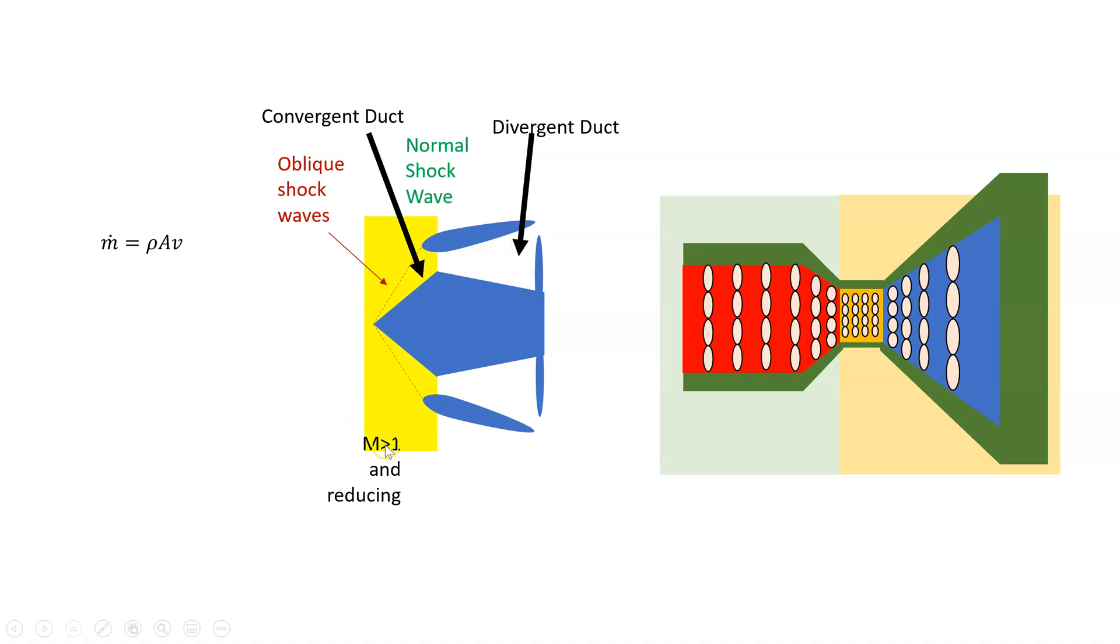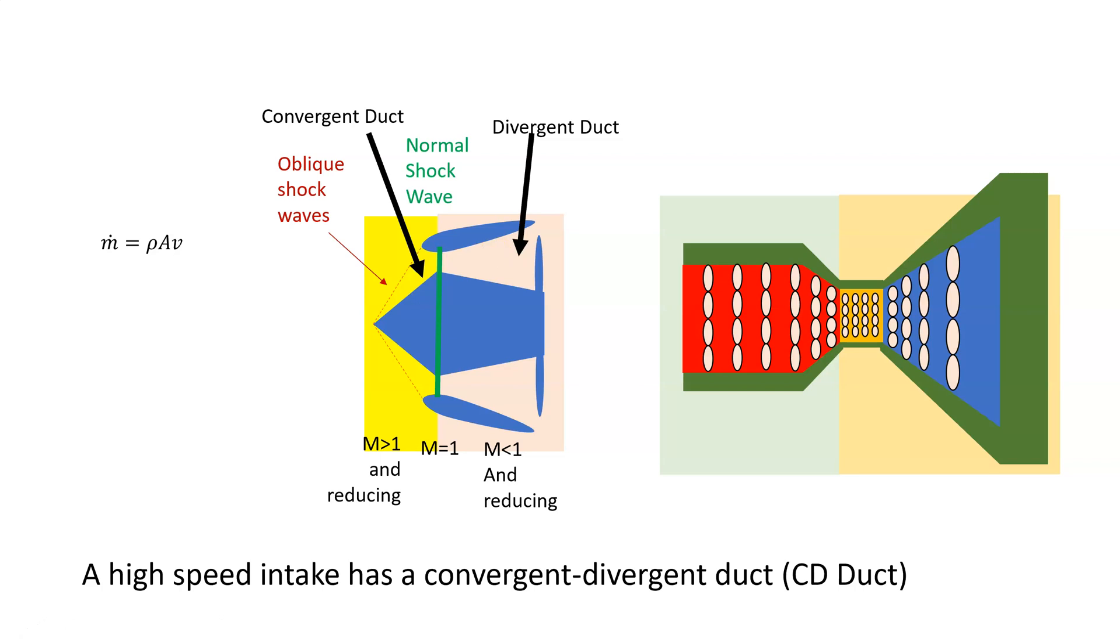So air is coming in, it's greater than Mach 1. It's coming through a duct like this, it's getting compressed, it's slowing down. At some point in the throat here, we're going to get a normal shock wave. So we have Mach 1 here, but as the air is slowing down, so on this side, it's less than Mach 1. And when it's less than Mach 1, it's subsonic air. And in subsonic air, we want this divergent section. So the area is increasing, the velocity is decreasing, and the pressure is increasing. So for a high-speed intake, we want a convergent-divergent duct.